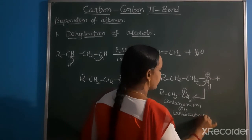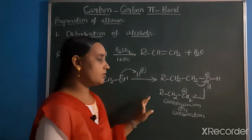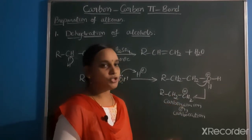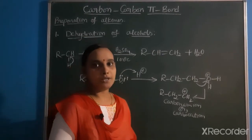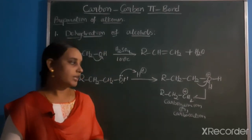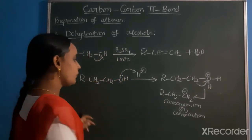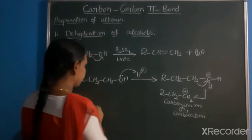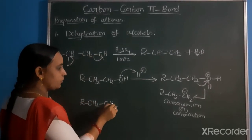Carbocation is a reactive intermediate which we have in our syllabus. Carbon with a negative charge is called carbanion, and we also have carbene. These reactive intermediates are part of our previous syllabus. The carbonium ion is very active.